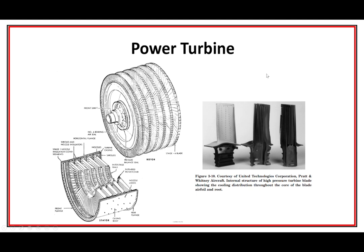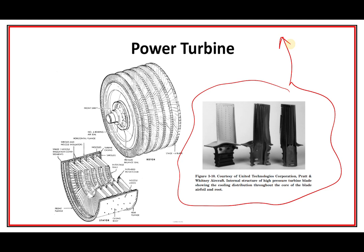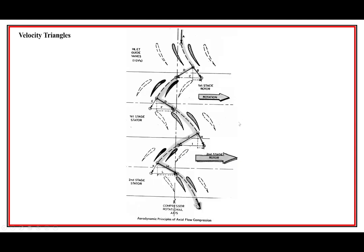Here is a United Technologies Corporation high-pressure turbine blade showing the small internal cooling passages they actually put inside the blades. Different material technology has also contributed to achieving higher blade temperatures. Here is the power turbine section.